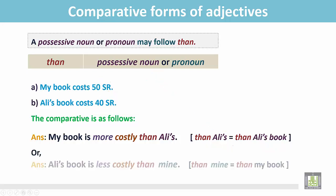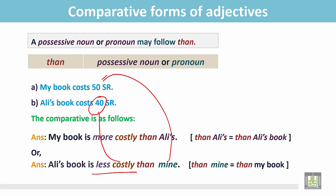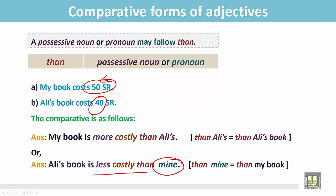Also, we can write the sentence this way: Ali's book is less costly than mine. His book is less costly because it is only 40 real and my book costs 50 real, so Ali's book is less costly than mine. We do not write 'than my book' — we write 'than mine', and 'mine' is a possessive pronoun.